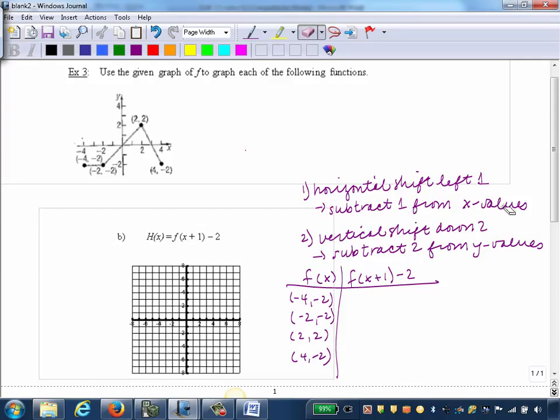So I'm going to subtract 1 from my x values in order to shift the graph left 1. So negative 4, my first point, negative 4 minus 1 would give me negative 5. In my second point, negative 2 minus 1 gives me negative 3. In my third point, 2 minus 1 gives me 1. And in my fourth point, 4 minus 1 shifts to 3.